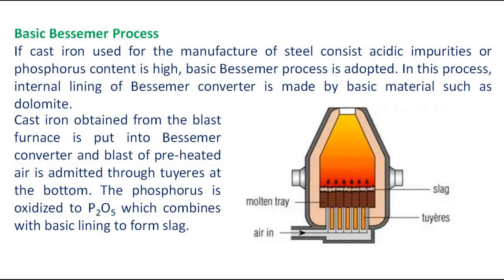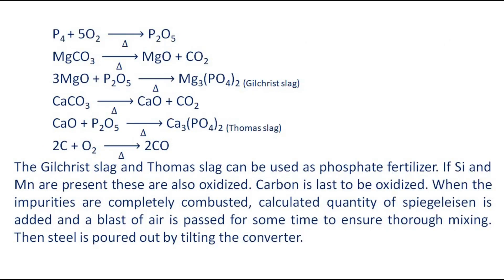Cast iron obtained from the blast furnace is put into the Bessemer converter and a blast of preheated air is admitted through tuyeres at the bottom. The phosphorus is oxidized to phosphorus pentoxide, which combines with the basic lining to form slag. The Gilchrist slag and Thomas slag can be used as phosphate fertilizer. If silicon and manganese are present, these are also oxidized.